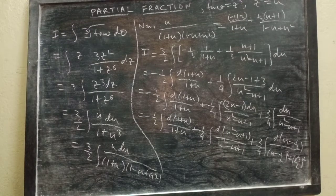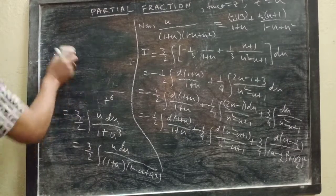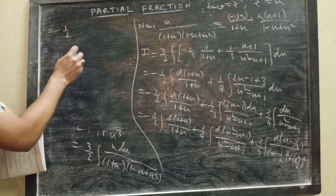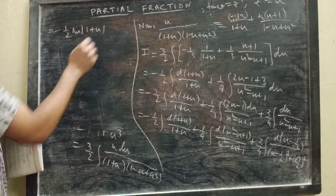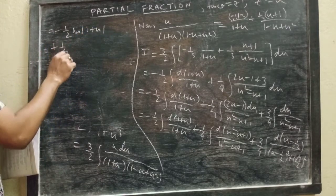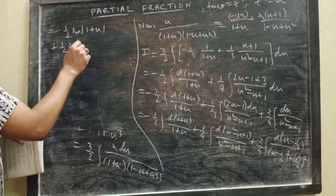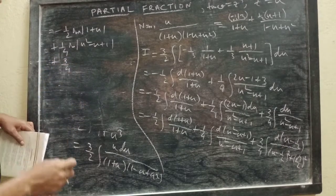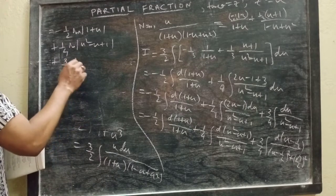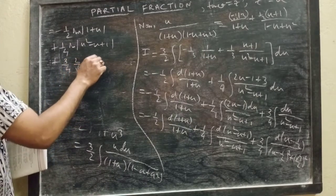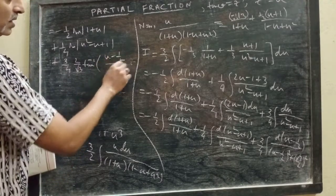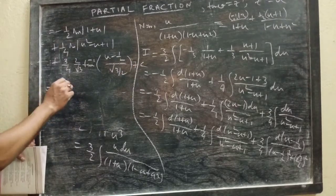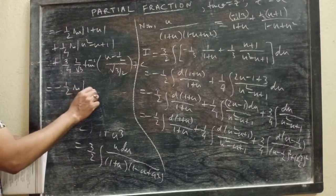Now I can write the result: this will be −(1/2) ln|1 + u|, then + (1/4) ln|u² − u + 1|, then + (3/4) · (2/√3) · tan⁻¹((u − 1/2)/(√3/2)) + C. Now substituting u = z².